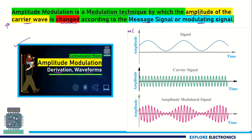So, this is the modulating signal, we call it as M of t. This is the carrier signal, we call it as C of t. This is the amplitude modulated signal, we call it as S of t. Sometimes we can write it as AM of t. Go and watch this video before continuing with the current video.